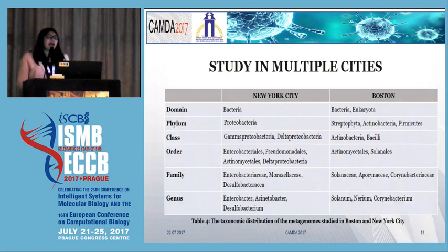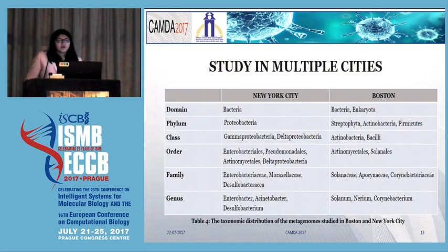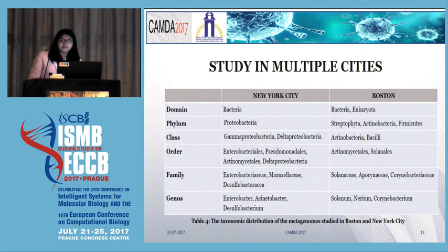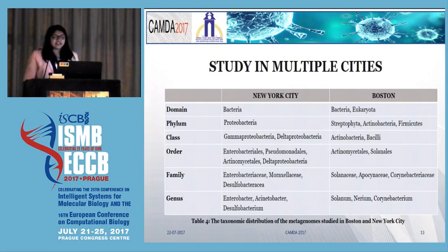To enhance our understanding, we have further compared our data with Boston. Boston City shows a more balanced ecosystem with the presence of bacteria, eukaryota, archaea, and other domains. The most common taxonomic divisions observed in the two cities are highlighted in the table.